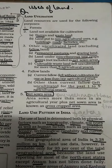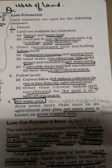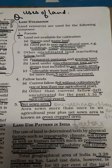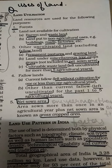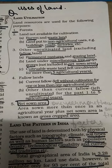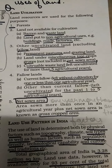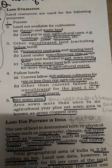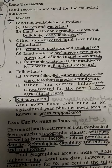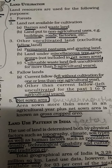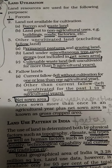Next is land utilization — how land is used. Land resources are used for many purposes. The first is forest. Land not available for cultivation — like barren or wasteland — cannot be used for farming. Land put to non-agricultural uses includes buildings, roads, institutions, factories, and infrastructure.